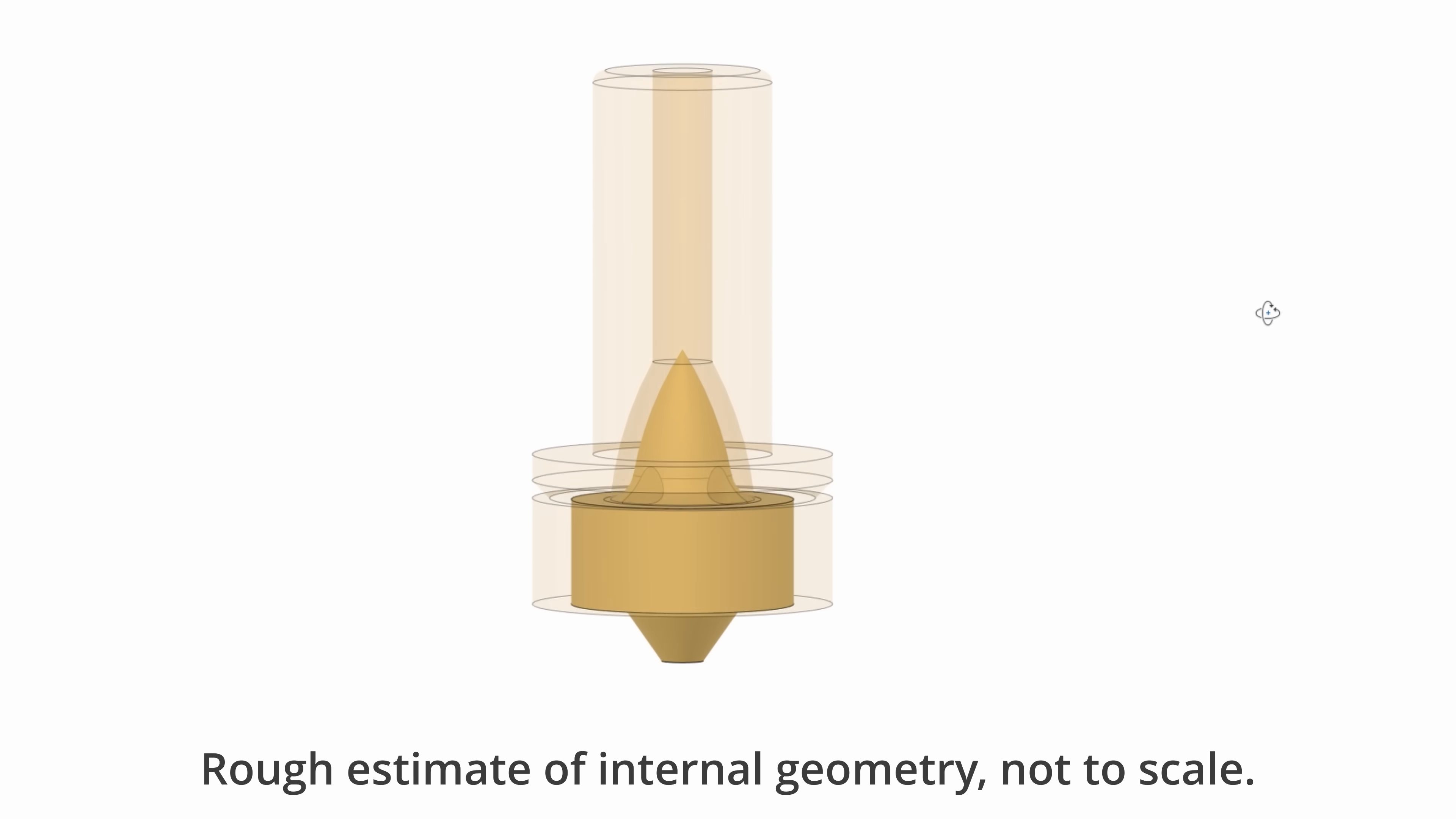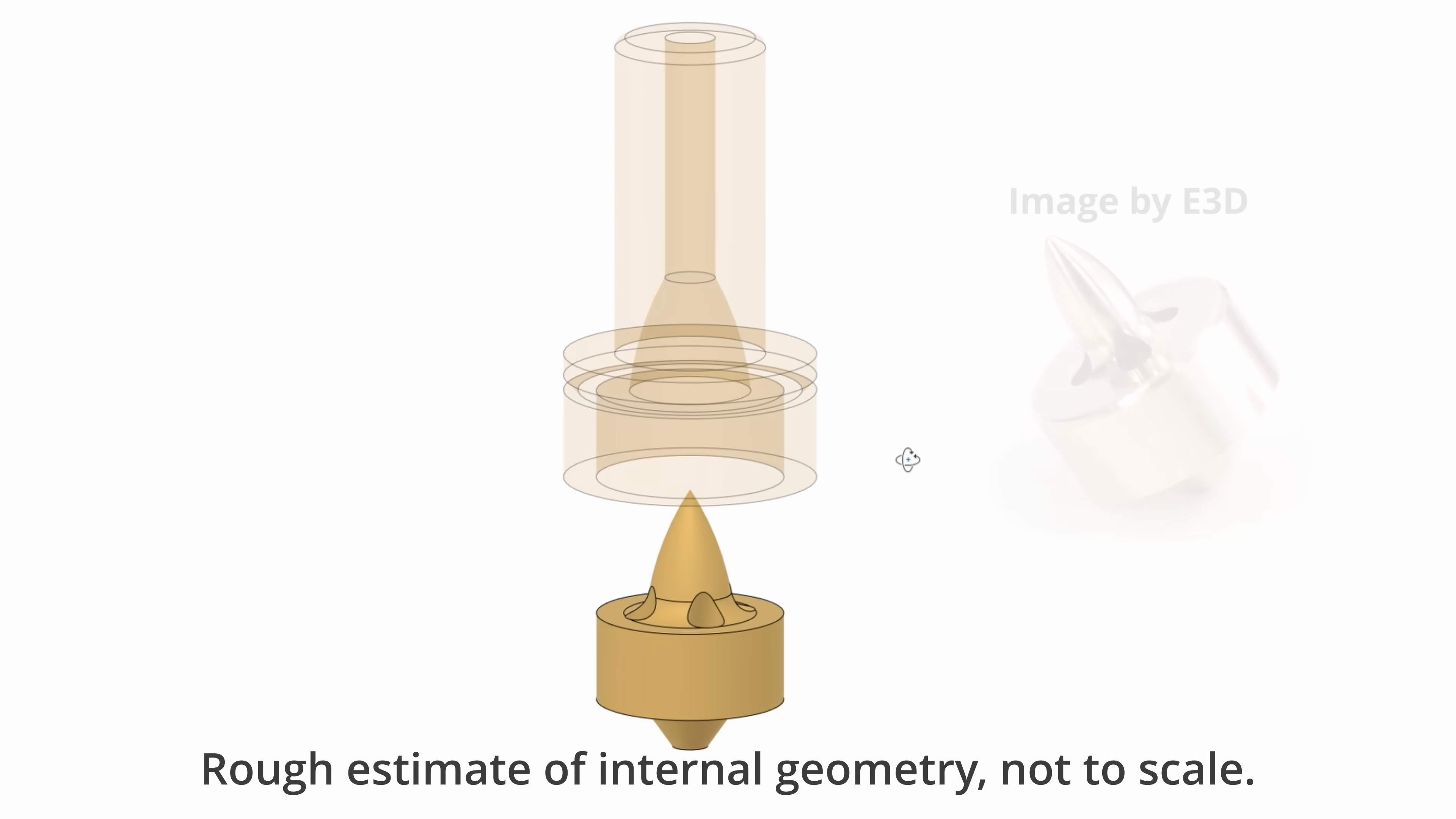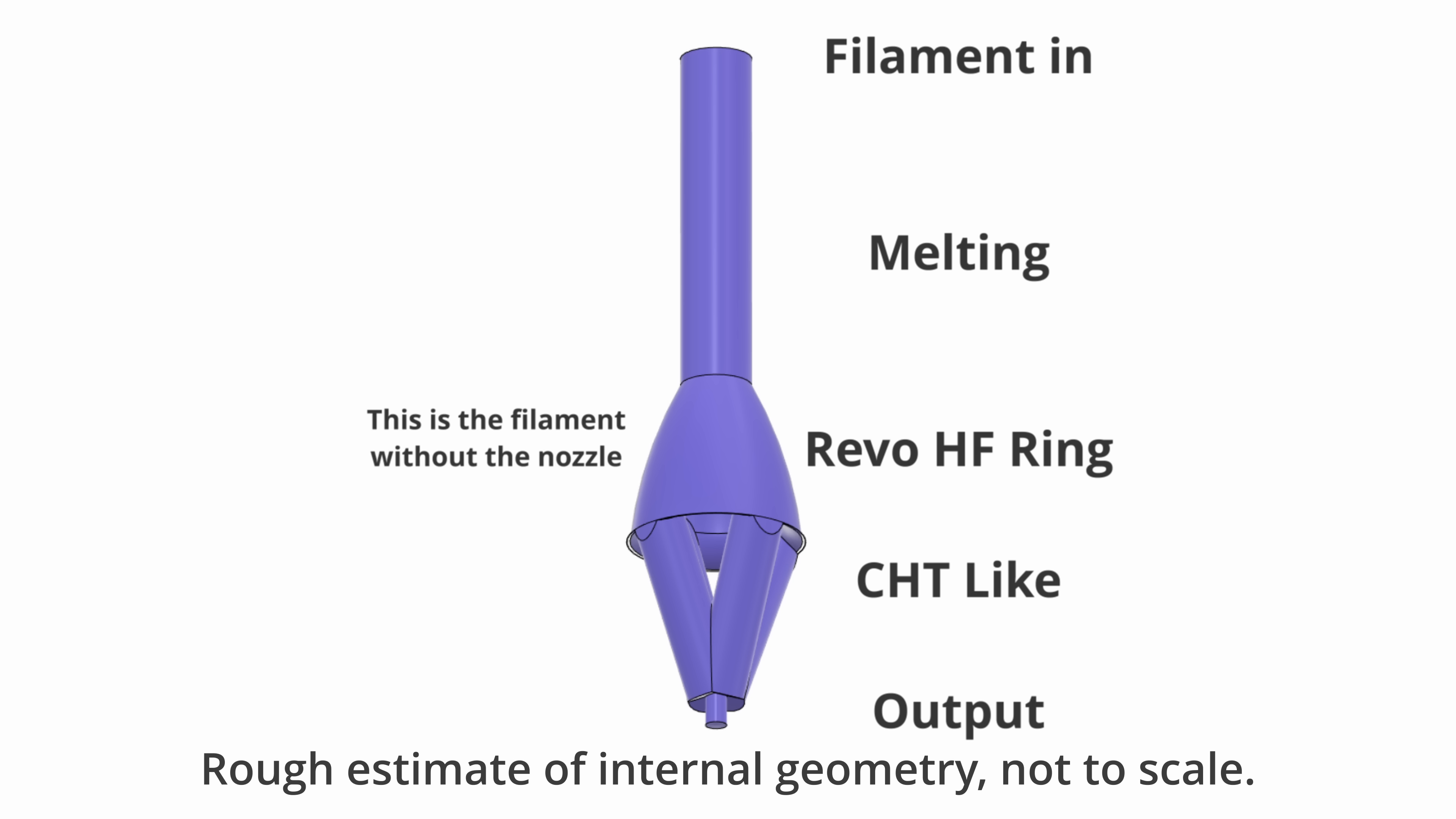Revo HF works by dividing the flow path into a ring, increasing the surface area available for heat transfer to the plastic. The nozzle is made in two parts: the main body where melting starts, and the high flow insert which uses an elongated tip to cut into the center of the filament, with four holes that allow material down into the extrusion orifice.